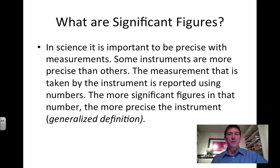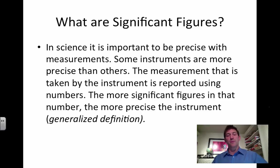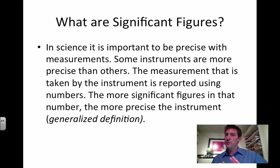I'm going to give you the rules and a few examples to help you out with this. But first of all, what are significant figures? In science, we use instruments — we never just use numbers. We're always dealing with objects, and when we measure those objects, we need to know how precise or accurate our measurement instruments are. As you read through this very loose definition — so be careful, it's far more in-depth than this — what we're trying to figure out is how precise our instruments are.